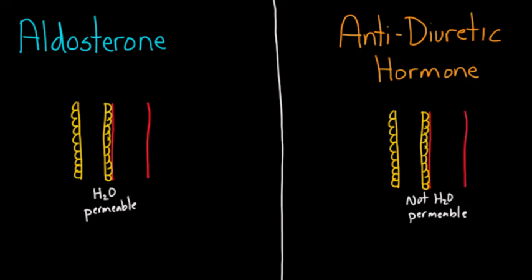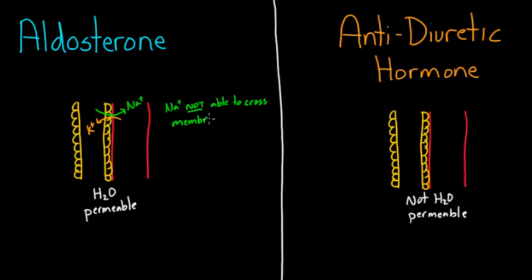The way that aldosterone works — the main thing it does — is it's going to pull in sodium and spit out potassium into the urine. That's the main activity of aldosterone in terms of capturing sodium. Now, sodium is not permeable to membranes — not able to cross membranes very easily. That's actually really important because if it can't cross membranes, it's going to contribute to tonicity, since ions that cannot cross membranes are the biggest contributors to tonicity. By comparison, potassium can slightly cross membranes.